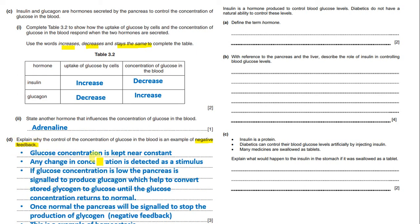Glucose concentration is kept near constant, so any change in concentration is detected as a stimulus. If glucose concentration is low, the pancreas is signaled to produce glucagon, which helps convert stored glycogen to glucose until the concentration returns to normal. Once normal, the pancreas is signaled to stop production — that is negative feedback, maintaining near-constant concentration.